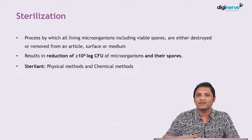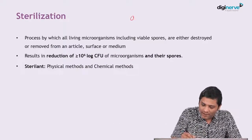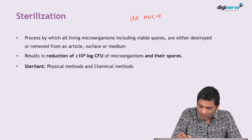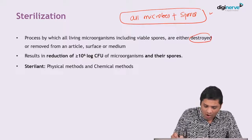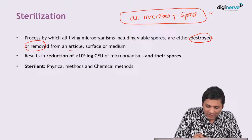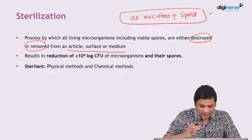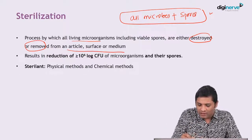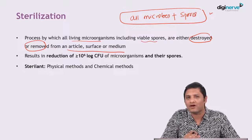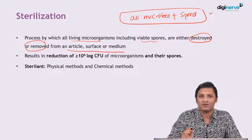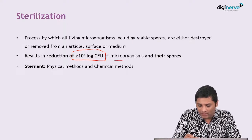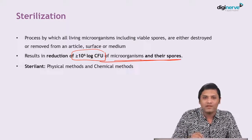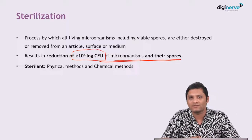First is sterilization. Sterilization is a process by which all microorganisms and their spores — including bacterial spores — are either destroyed or removed from an article, surface, or medium. You will have a log reduction of 10 to the power of 6 colony forming units; microorganisms and their spores will be reduced by the process of sterilization.